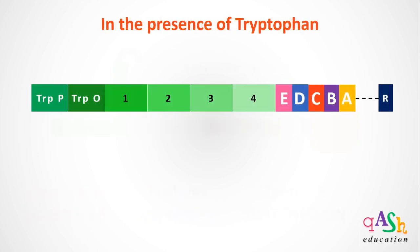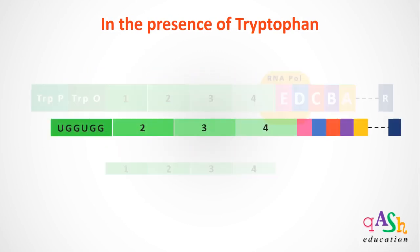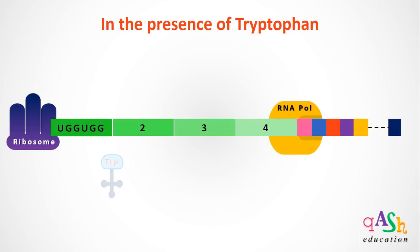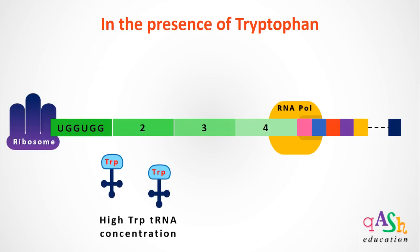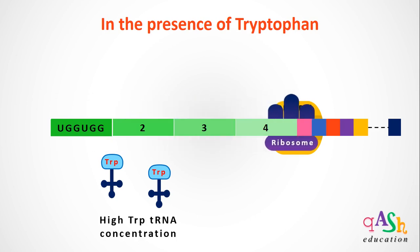Let's look at the other case: in the presence of tryptophan. RNA polymerase will bind at the operator site and begin transcribing the TrpL gene, then halt at the attenuation site in segment 4. The ribosome now binds at the first segment of the TrpL mRNA and begins translating it. Now that the concentration of tryptophan is high in the media, the concentration of the trp-tRNA will also be high, allowing the ribosome to smoothly catalyze the translation of the TrpL mRNA.